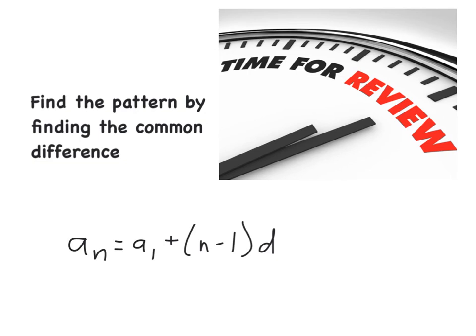As a review: find the pattern by finding the common difference — subtract two consecutive terms to figure out how you get from one to the next. To find the equation for the nth term, use a sub n equals a sub 1 plus the quantity of n minus 1 times d. Plug in the numbers: d is the common difference and a sub 1 is the very first term.